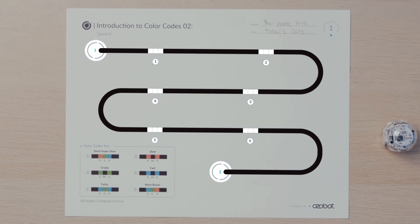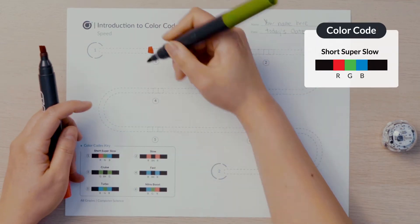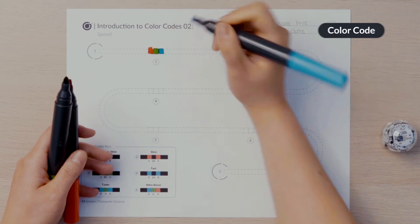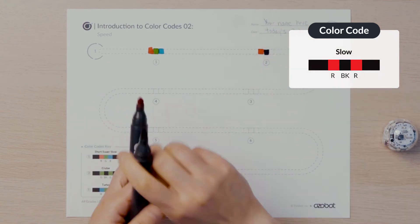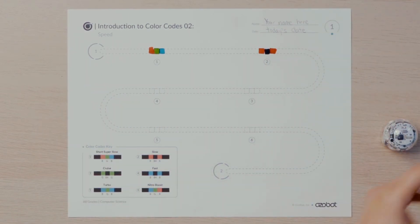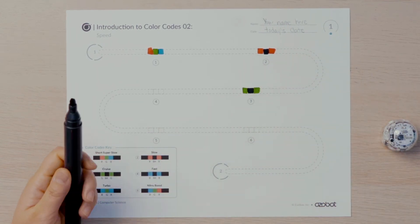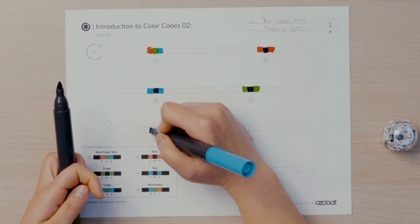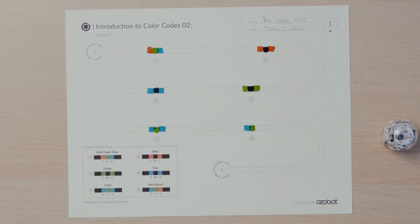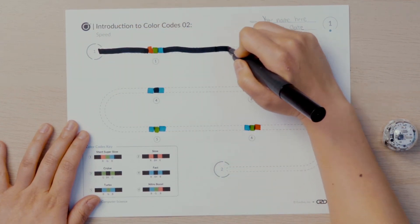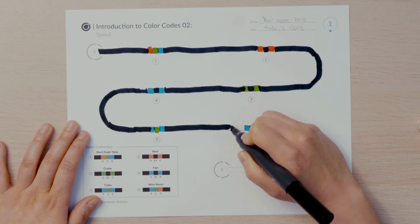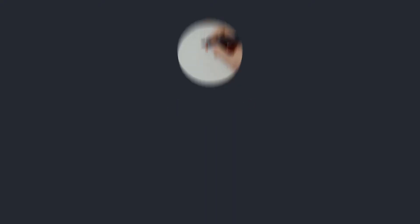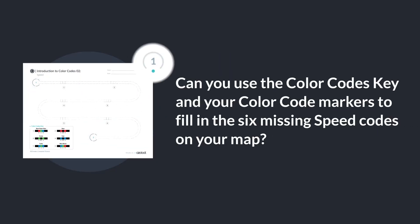I am going to begin filling my map in. The first missing color code is short super slow — I will add the color sequence RGB for number one. The next missing color code is slow — I will add the color sequence RBKR for number two. Finally, I will use my black marker to trace over the pathway to make sure every color code is between two black lines. Can you use the color codes key and your color code markers to fill in the six missing speed codes on your map?